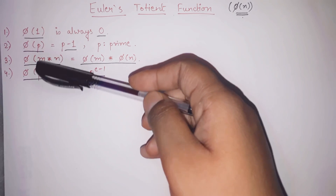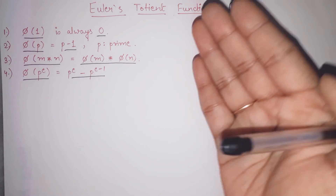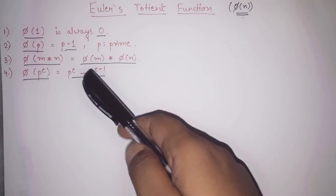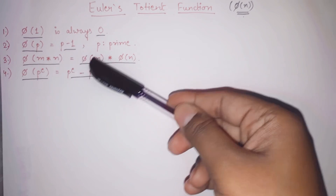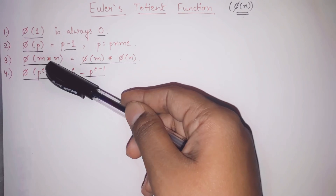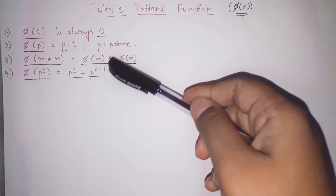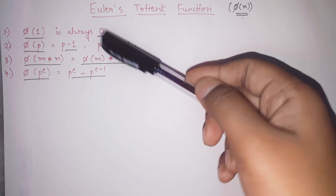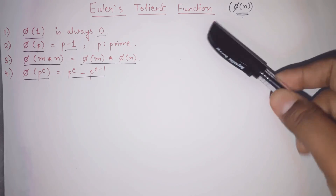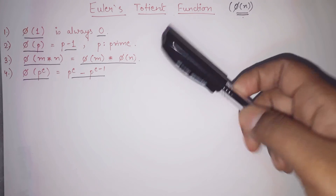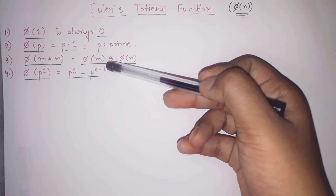Third: phi of m times n. If you have one number n and you break it into two numbers m and n, its answer would be the multiplication of both individually — phi of m times n equals phi of m into phi of n. You find Euler's Totient function of both individually and then multiply them. Fourth: phi of p raised to e. If you can convert n into p raised to e — some exponential form — then its answer is p raised to e minus p raised to e minus 1.